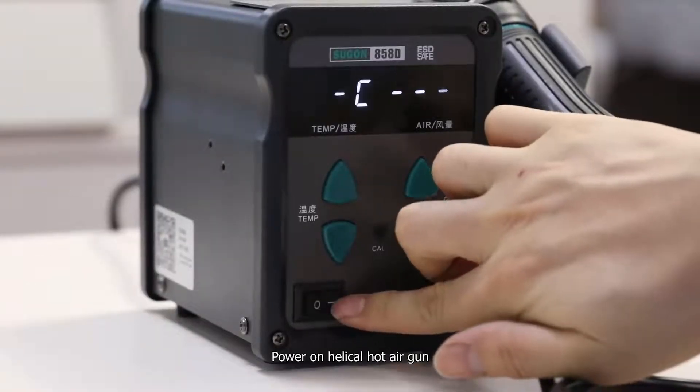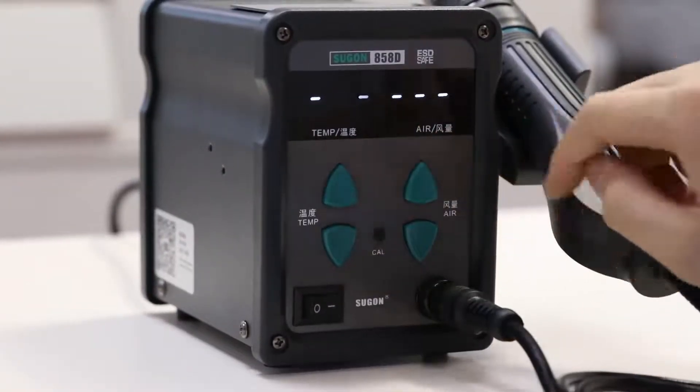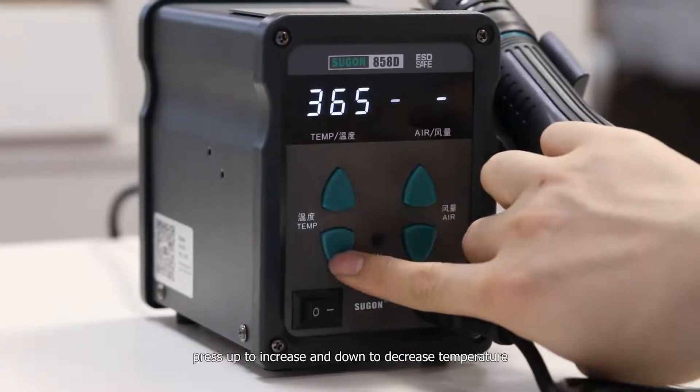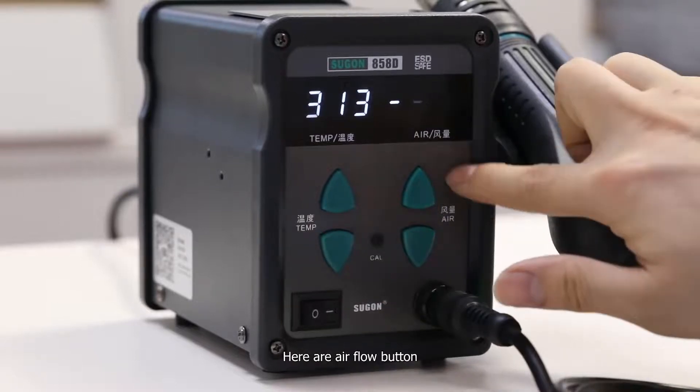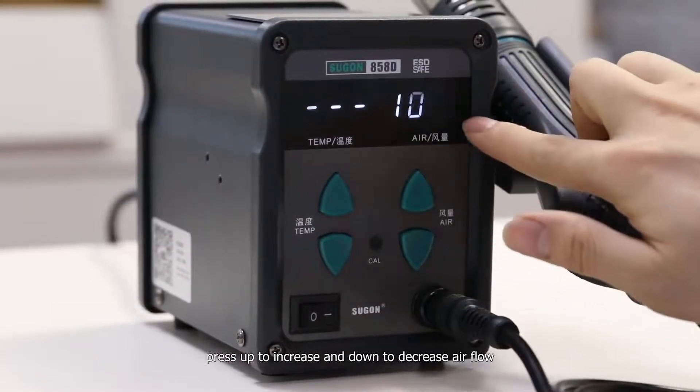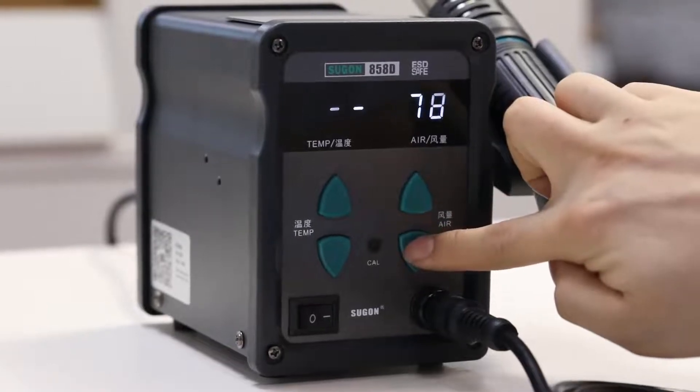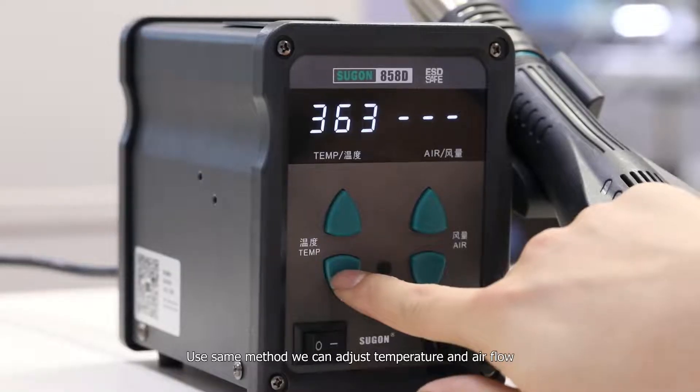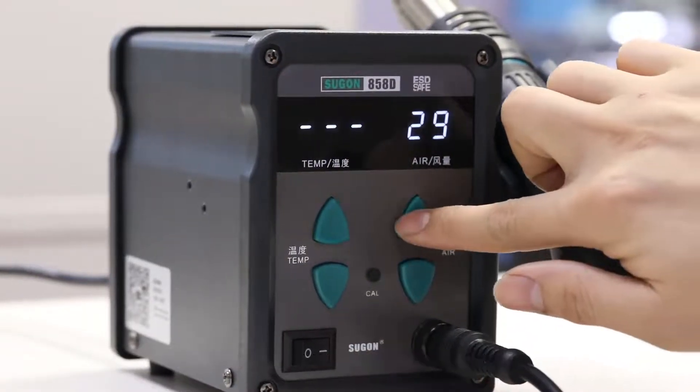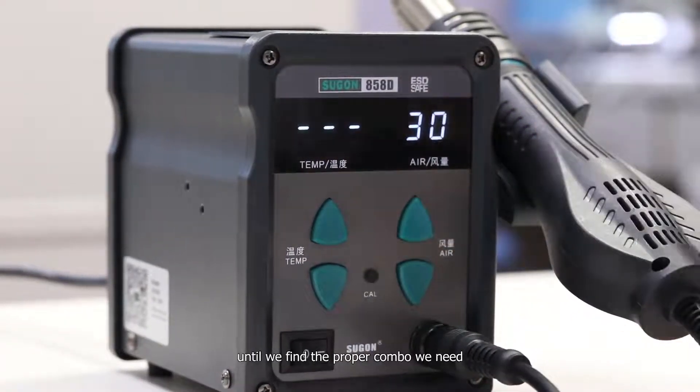Power on helical hot air gun. Here are temperature buttons. Press up to increase and down to decrease temperature. Here are air flow buttons. Press up to increase and down to decrease air flow. Using same method, we can adjust the temperature and air flow until we find the proper combo we need.